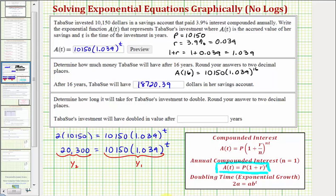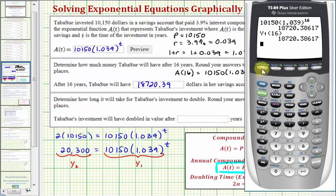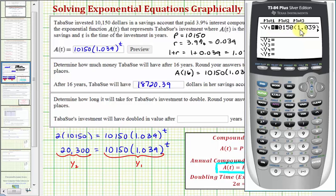So back to the calculator, we'll press Y equals. Again, A(T) is in Y1, so we'll press enter, and then in Y2, we'll enter 20,300, which is the amount needed to double the initial investment.